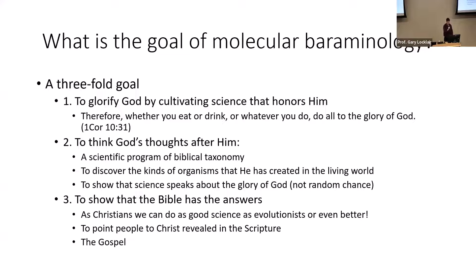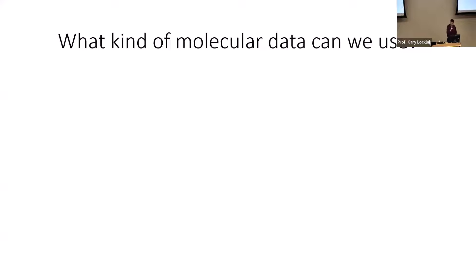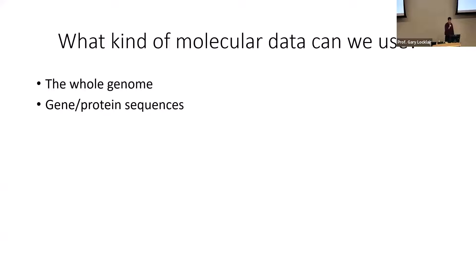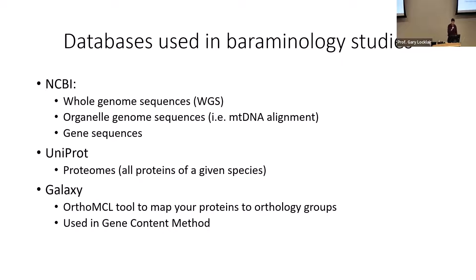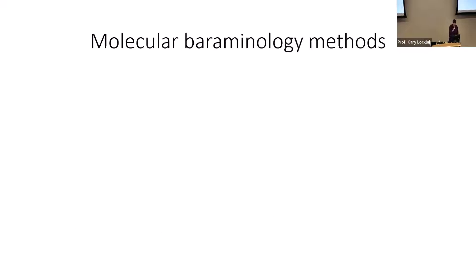Molecular data in databases includes whole genome sequences — the human genome is three billion DNA letters, while a bacterial genome is about one million. There are also general protein sequences, mitochondrial and chloroplast DNA sequences, and various databases: NCBI for full genome and gene sequences, UniProt as a protein database, and the Galaxy server for comparing protein content between two species.